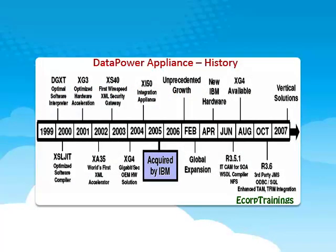Coming to Data Power Appliance's history. Data Power was founded in early 1999 by Eugene Kuznetsov. Kuznetsov assembled a set of MIT engineers with a background in software-based acceleration. In 2001, the company developed XML Generation 3, XG3, for secure XML processing.